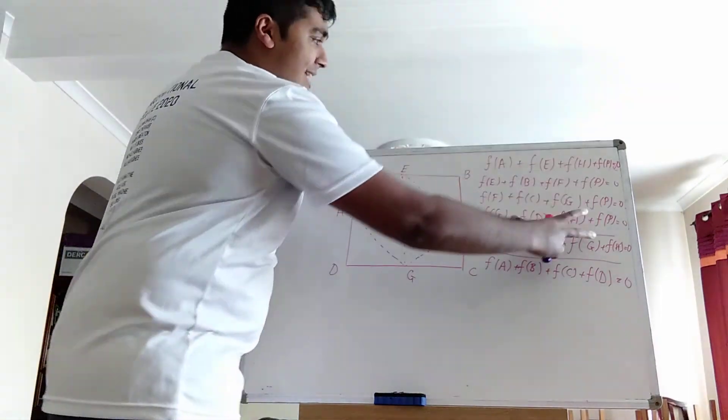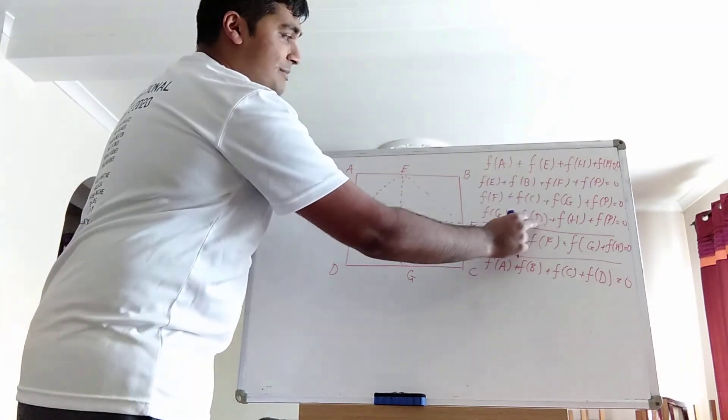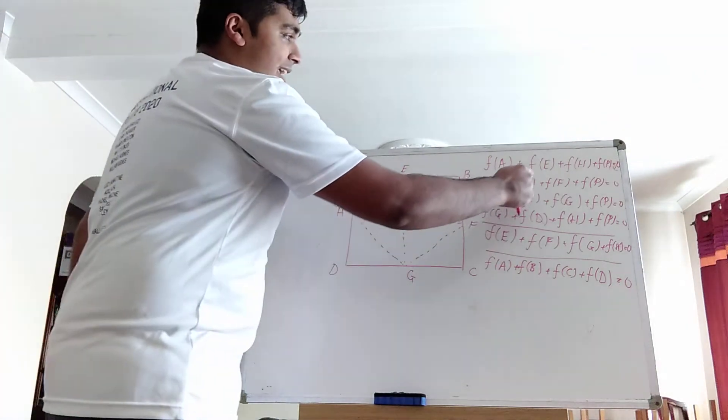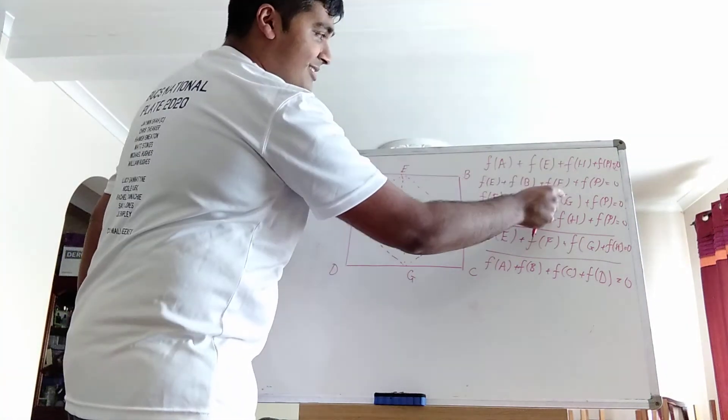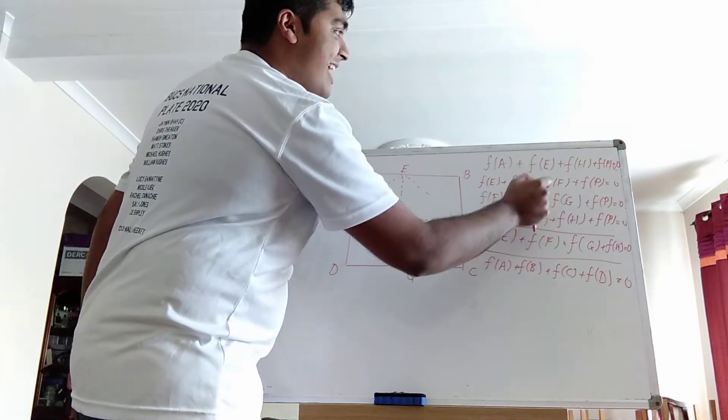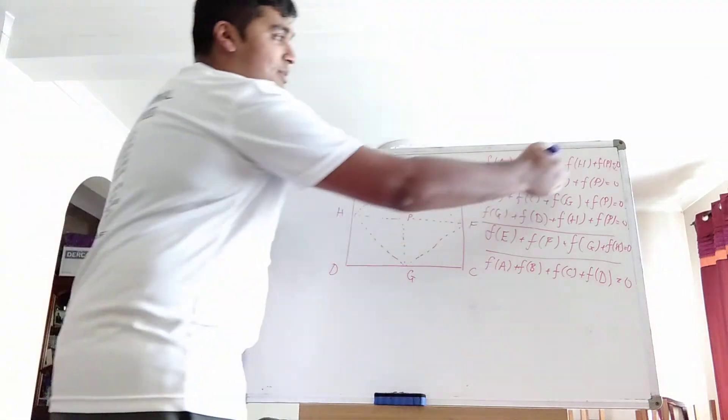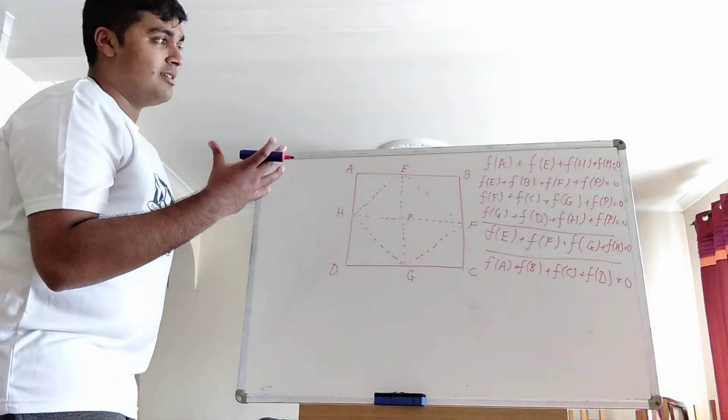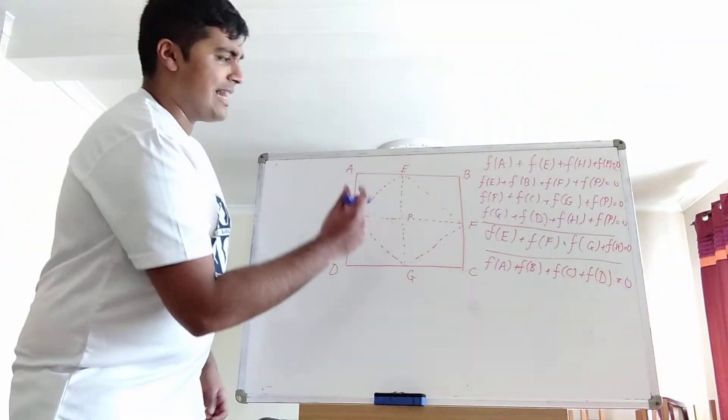Because if we add up this left-hand side, we're going to get an f(a) plus an f(b) plus an f(c) plus an f(d). Those all vanish. Those equal zero. And then we're going to get f(e) times 2, f(f) times 2, f(g) times 2, and then f(h) times 2. And then, of course, we've got the four lots of f(p)'s. And then, hopefully, that equals zero. And in fact, it does.